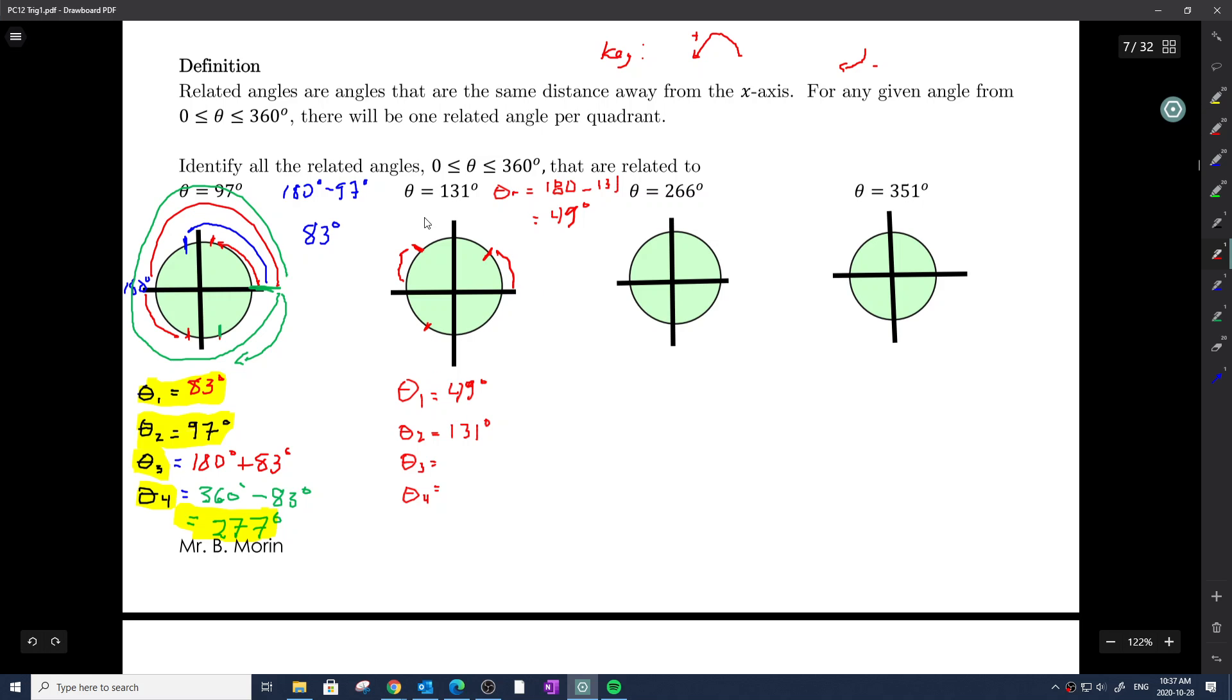My theta 3 is going to be 180 plus 49, so that would be 229. 180 plus 49. My angle 4, quadrant 4 angle, is going to be 360 minus 49. I believe is 311 degrees. So those are my angles. Try out the next couple of examples. Press pause. I'll reveal the third related angle family and the solutions to that. After that, I'll work on the last one.